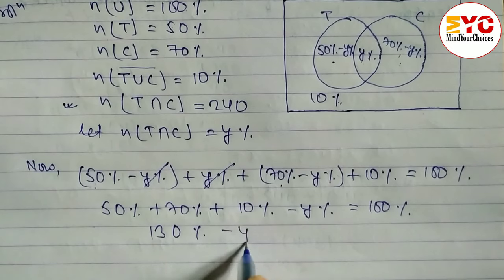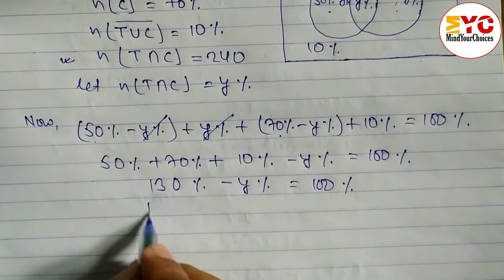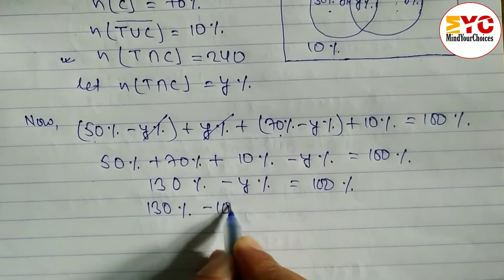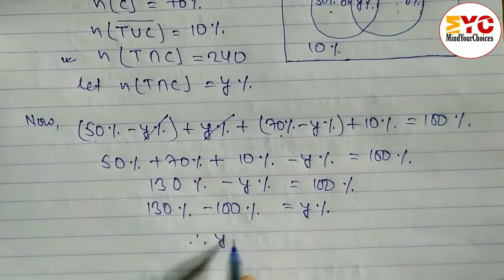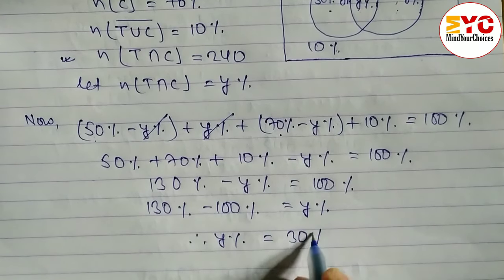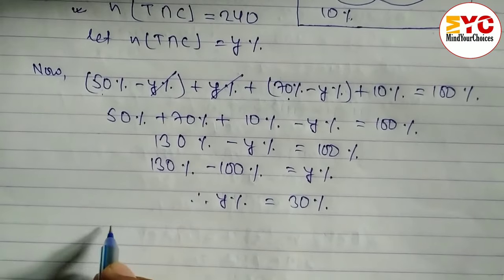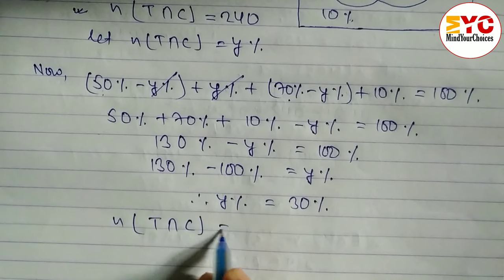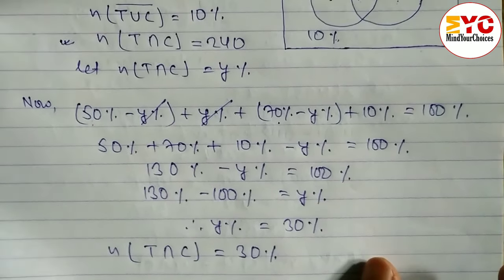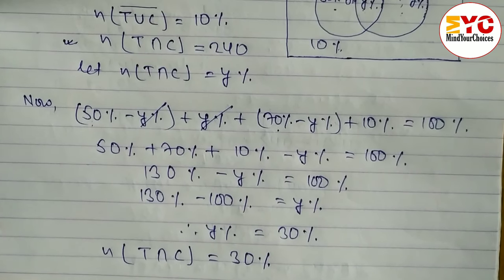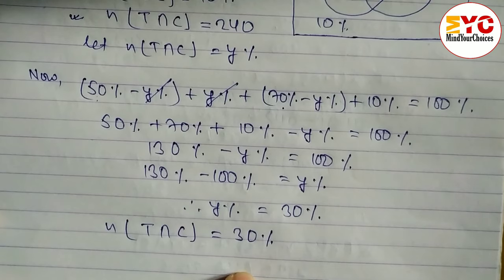So we have 130% − Y% = 100%. Therefore 130% − 100% = Y%, which gives Y% = 30%. Since we let T intersection C = Y%, we can write T intersection C = 30%. So 30% of students like both tea and coffee.